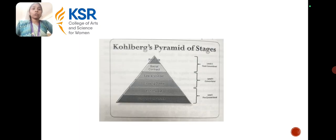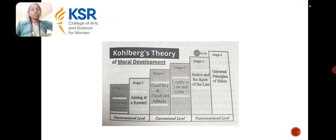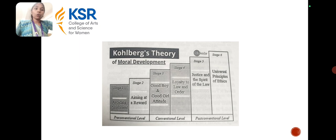This is Kohlberg's pyramid of stages, which has various levels: level 1, level 2, and level 3. It explains the theory of moral development, given as stage 1 through stage 6. Stage 1: avoid punishment. Stage 2: aiming at a reward. Stage 3: good boy or good girl attitude. Stage 4: loyalty to law and order. Stage 5: justice and spirit of the laws. Stage 6: universal principles of ethics.